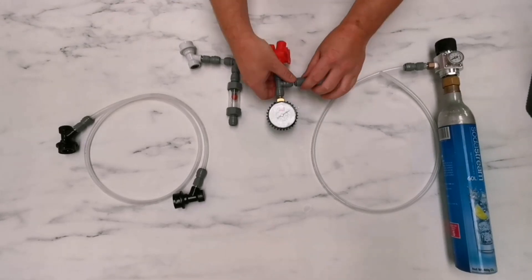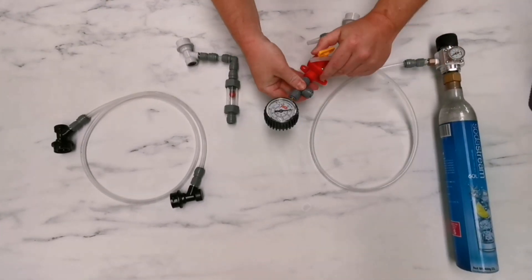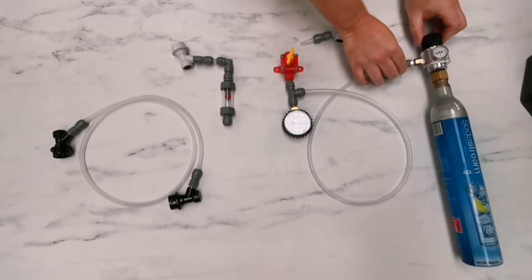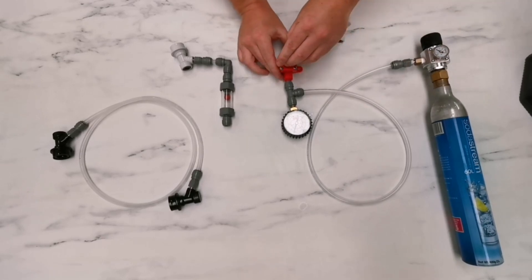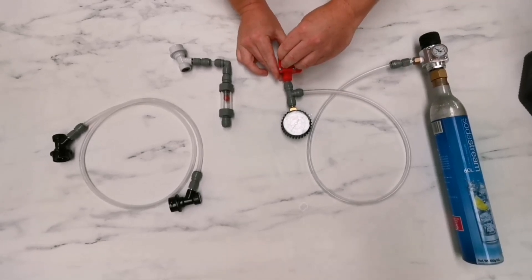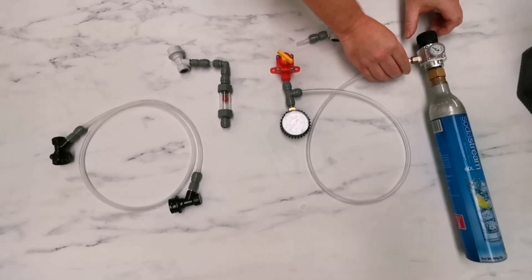The first thing we need to do is set the release pressure of our spunding valve. So attach it to a regulator. Turn the regulator pressure up until gas starts releasing from the spunding valve and then turn the spunding valve slightly down until flow stops. That will equalize the pressure between the regulator and the gauge on the spunding valve.